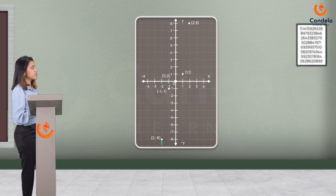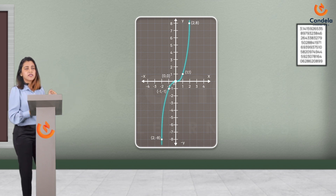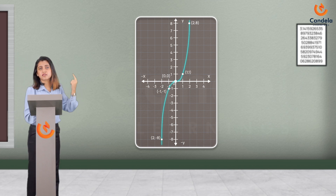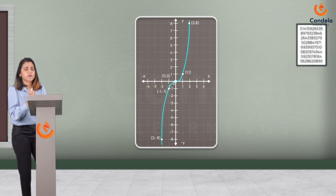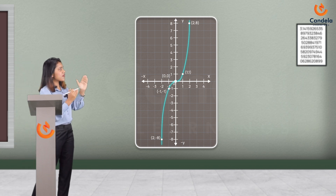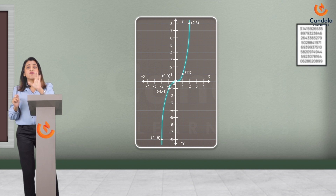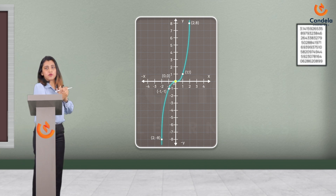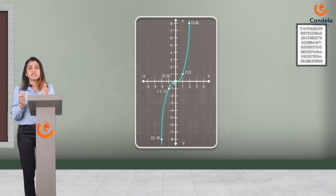Let's join these points. We are getting a different curve — it is not similar to the first graph. We can tell that there is no fixed shape for a cubic polynomial. This graph cuts the x-axis at exactly one point, which means there is only one zero for this polynomial. The point is (0, 0), and the x-coordinate is 0, which is the zero.